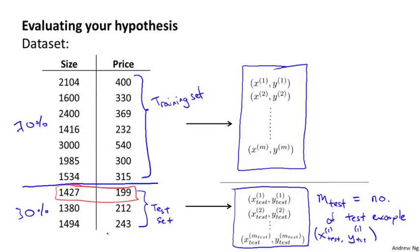So, if your data were already randomly sorted, you could just take the first 70% and last 30%. But if your data were not randomly ordered, it'd be better to randomly shuffle or to randomly reorder the examples in your training set before sending the first 70% to the training set and the last 30% to the test set.